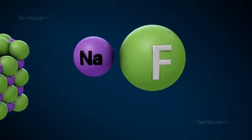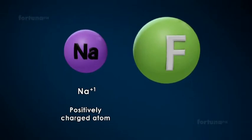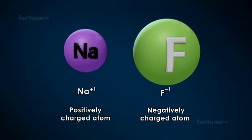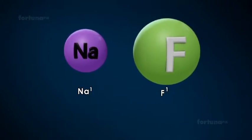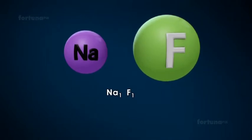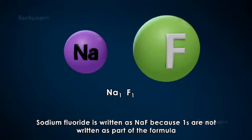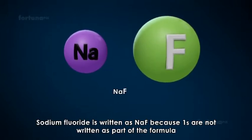The next step is to write the cation, the positively charged atom, on the left and the anion, the negatively charged atom, on the right. The formula is written by criss-crossing the valences and making them subscripts. More precisely, the chemical formula for sodium fluoride is written as NaF because 1's are not written as part of the formula.